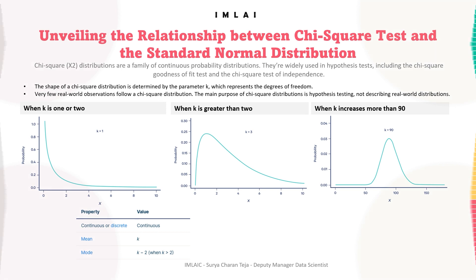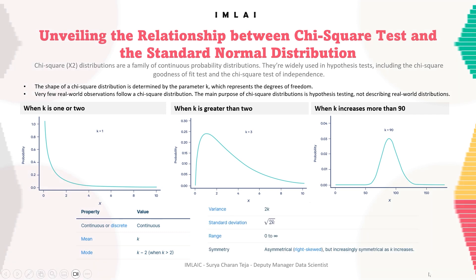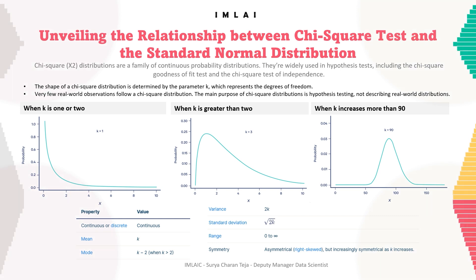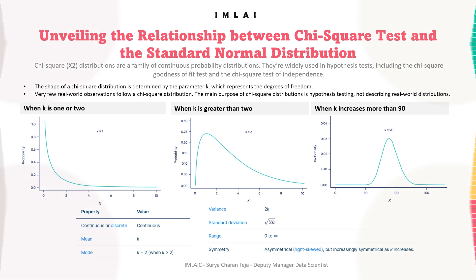Chi-square distributions start at zero and continue to infinity. The chi-square distribution starts at zero because it describes the sum of squared random variables, and a squared number cannot be negative. The mean of the chi-square distribution equals its degrees of freedom k. Because the chi-square distribution is right-skewed, the mean is greater than the median and mode. The variance of the chi-square distribution is 2k, where k is the degrees of freedom.